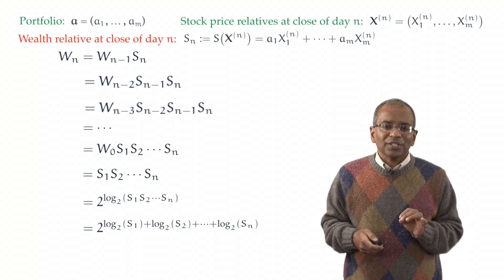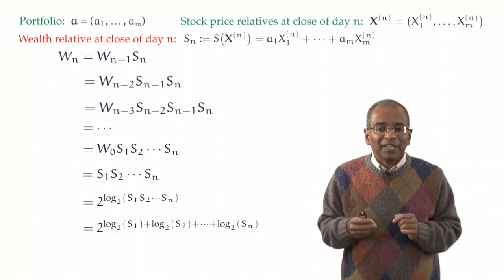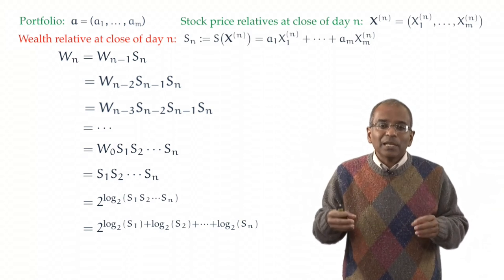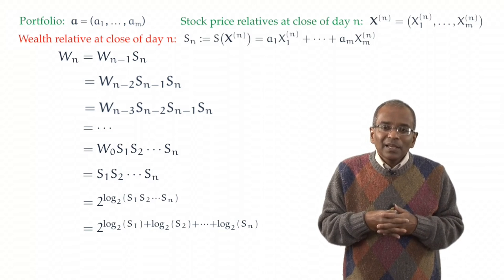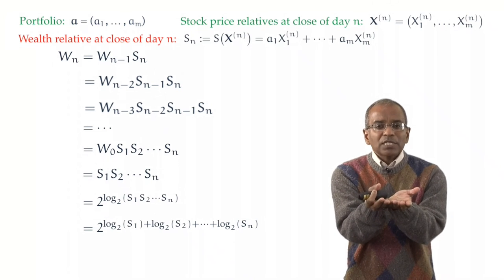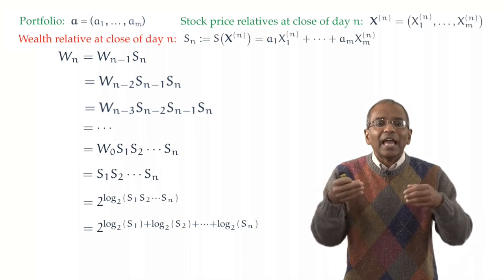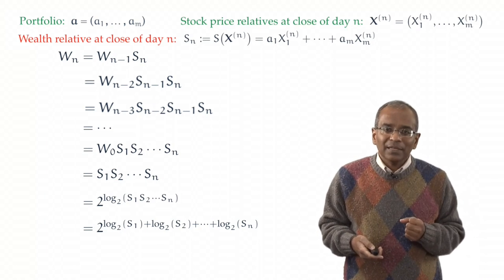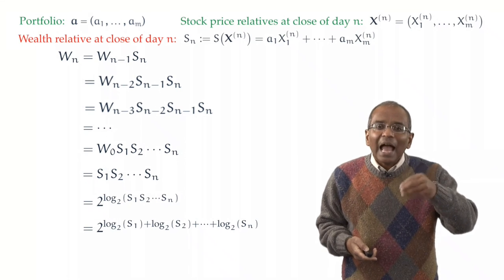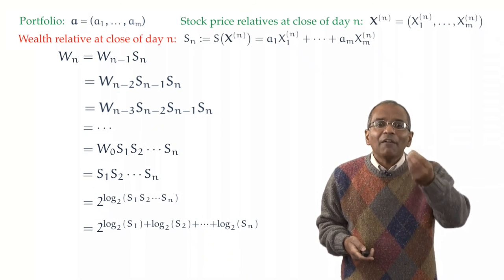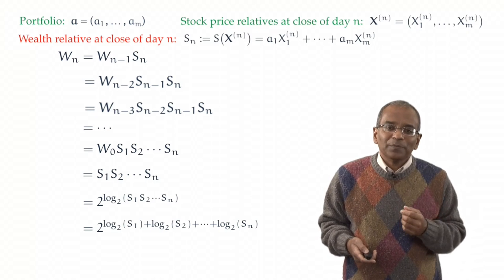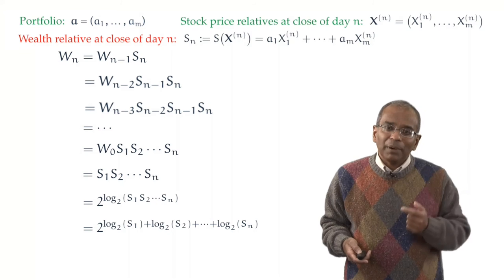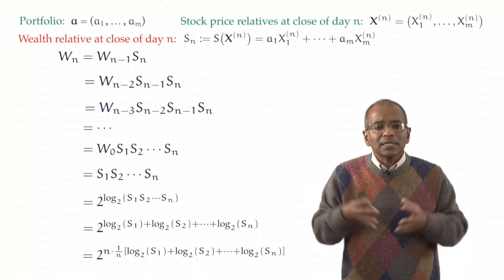One more step of simplification, or at least clarification. We have a sum of n entities, admittedly looking complex and messy. Well, it'll be natural then to consider what happens to the average, the arithmetic average of such a sum. In other words, what happens if we divide it by n? That gives us the average change, the average logarithm of a wealth ratio. Of course, I can't simply divide by n if I don't multiply by n. And so here is an identity.